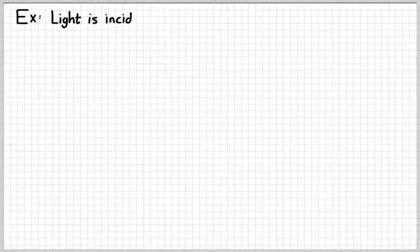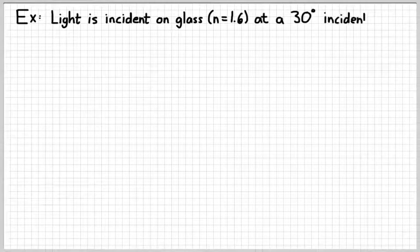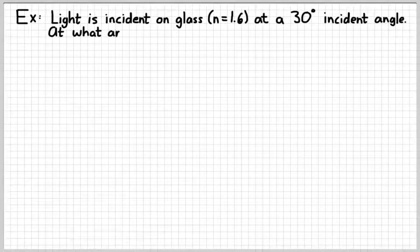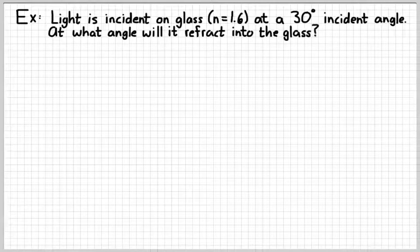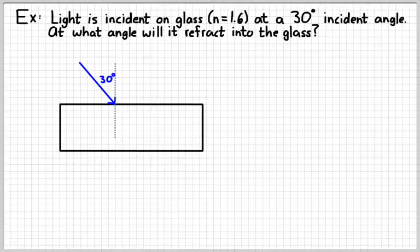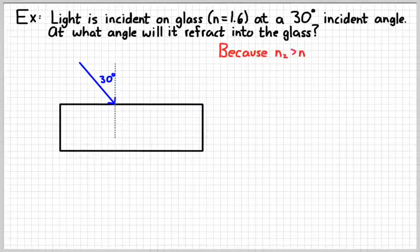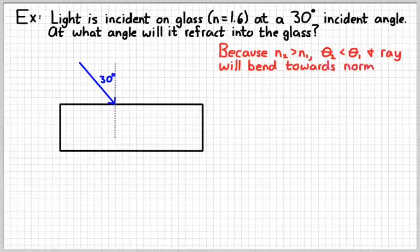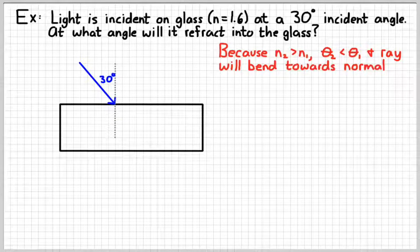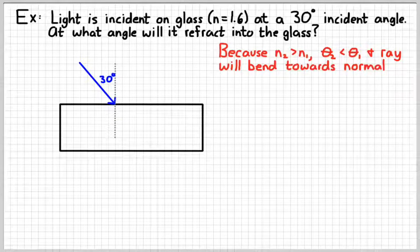So quick example. Suppose we take light and we shine it on glass, and the index of glass is about 1.6. It varies depending on what the glass is made out of, at a 30 degree angle of incidence. We want to know what angle it will refract to in the glass. So here's a picture. Incident angle of 30 degrees. We know that n2 is greater than n1, 1.6 is greater than one. And so I know that the incident angle is going to be larger than the refracted angle.